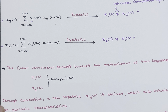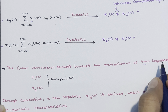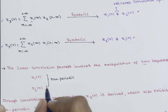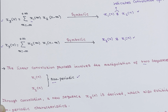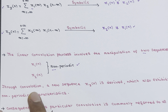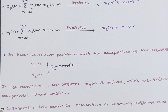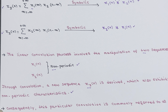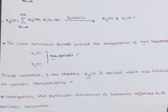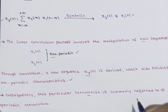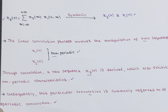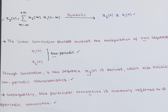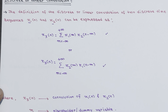The linear convolution process involves the manipulation of two sequences x1(n) and x2(n) which are non-periodic in nature. Through convolution, a new sequence x3(n) is derived which also exhibits non-periodic characteristics. Consequently, this convolution is commonly referred to as aperiodic convolution.